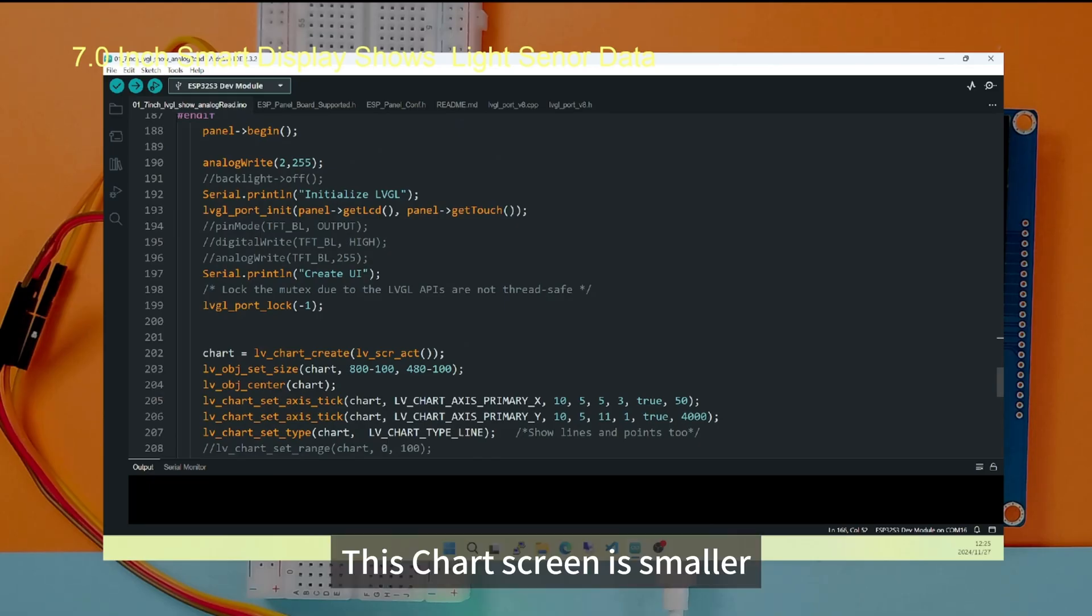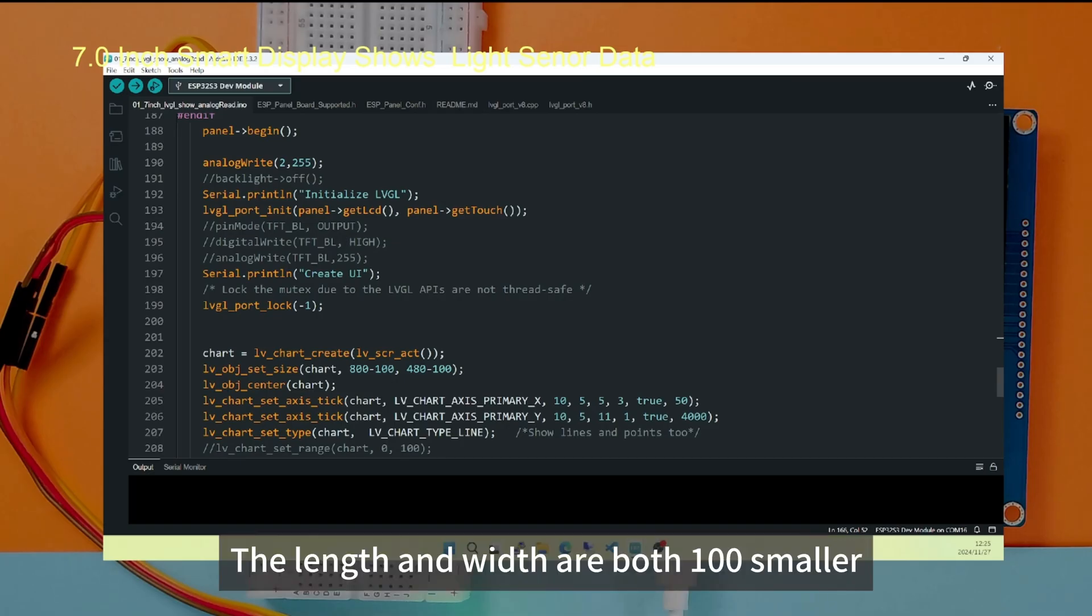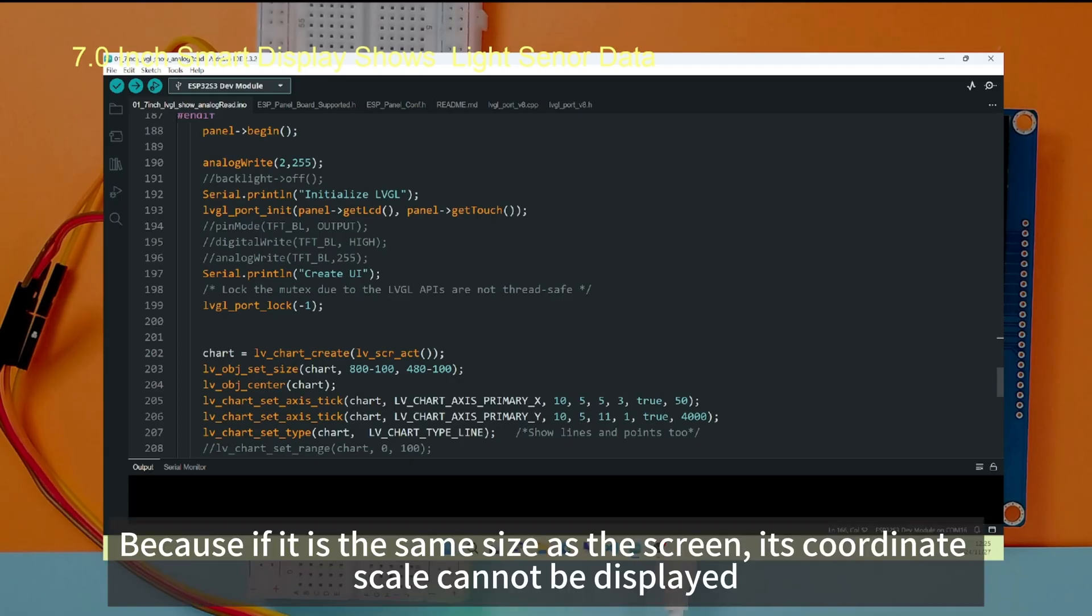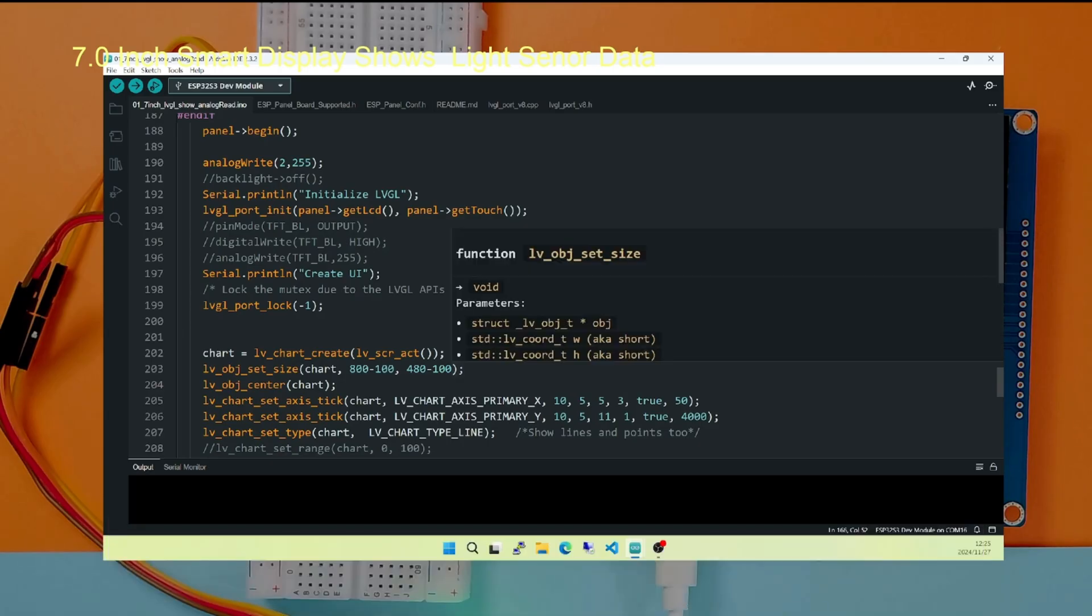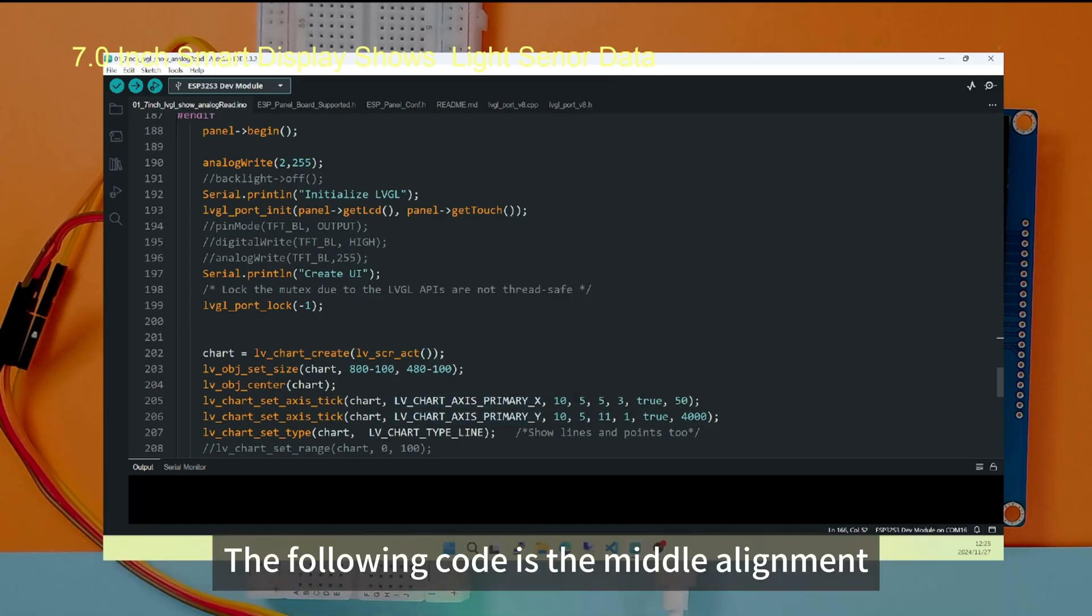This chart screen is smaller. The length and width are both 100 smaller. Because if it is the same size as the screen, its coordinate scale cannot be displayed.